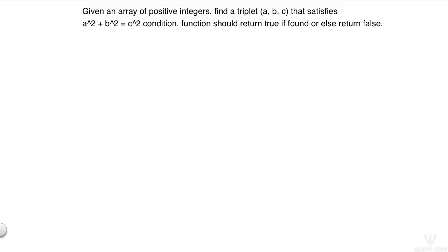Welcome to SF Jobs Lab. We bring you all possible solutions to interview questions, including the most efficient one. In today's problem, we are going to find a Pythagorean triplet in an array. We have an array of positive integers in which we need to find a triplet a, b, c that satisfies a² + b² = c², where a, b, c are elements of the array. The function should return true if such a triplet exists, or false otherwise.